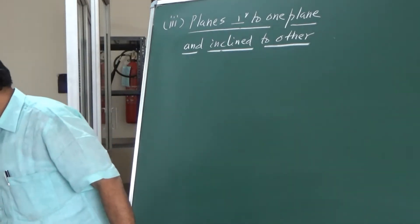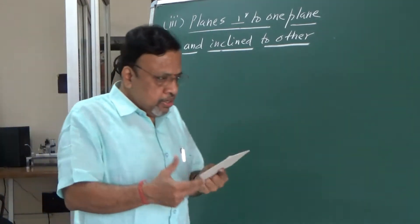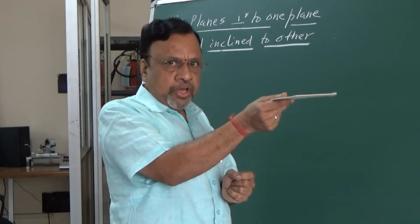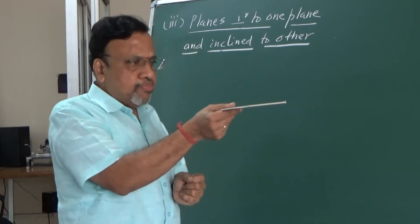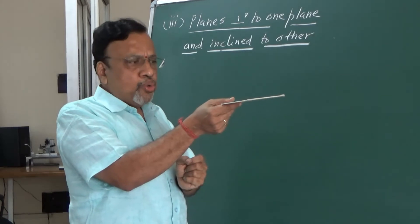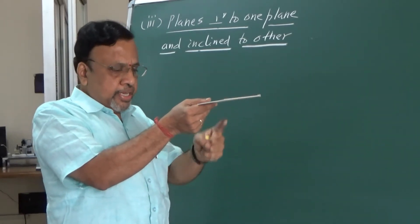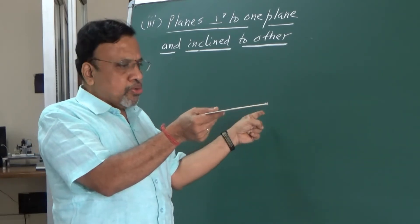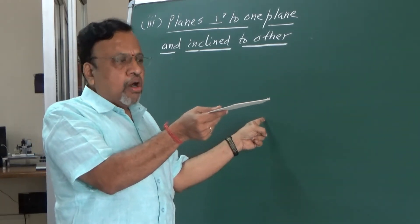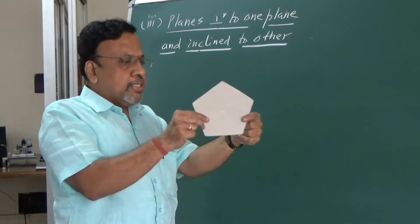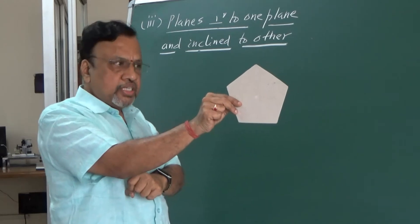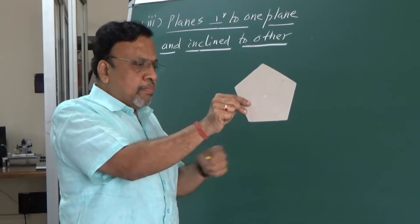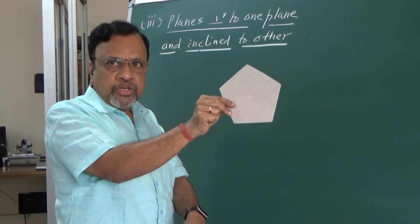We have already seen two cases. If I keep the plane in this way, this particular plane is parallel to HP but perpendicular to VP. Or I can keep it this way — then this particular plane is parallel to VP but perpendicular to HP.